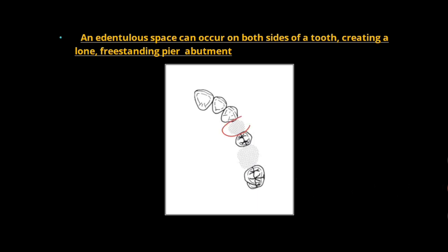Here you can see edentulous space occurring on both sides of a tooth, and this tooth is acting as a lone freestanding pier abutment.